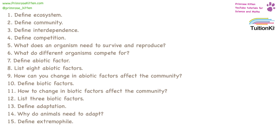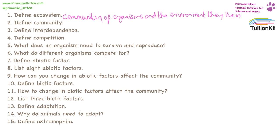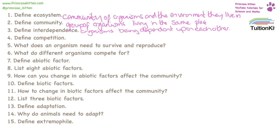An ecosystem is a community of organisms and their environment. A community is a group of people, plants, and animals all living in the same place. Interdependence is where two or more organisms are dependent upon each other. Competition is where a number of different organisms are competing for the same resource.